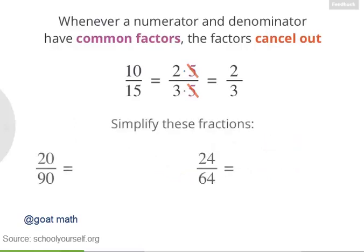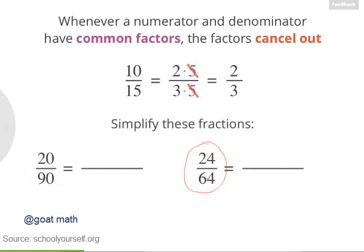Next, try simplifying two more fractions: 20 ninetieths and 24 sixty-fourths. Remember to cancel out as many common factors as you can.